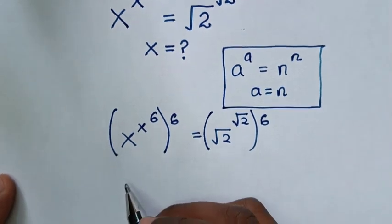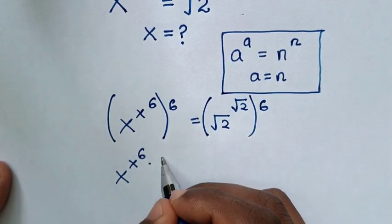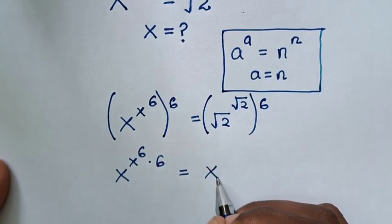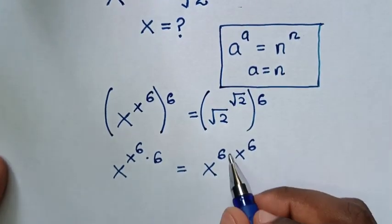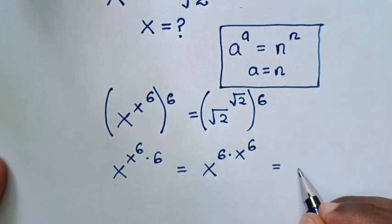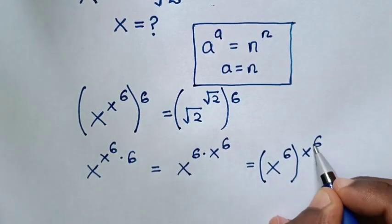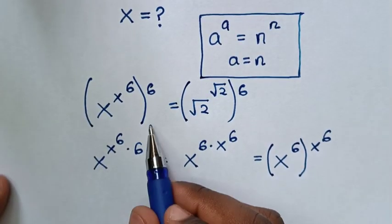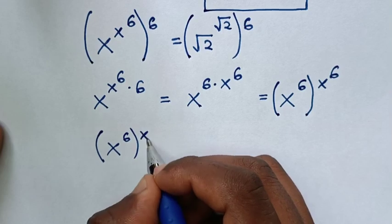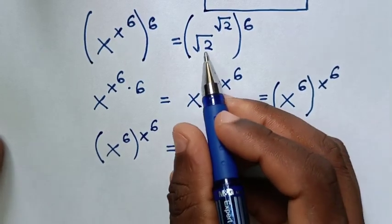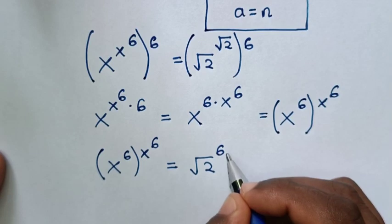From here it is the same as x power of x power of 6 times power of 6. In the next step we apply the bracket, so it will be equal to x power of 6, bracket, by power of x power of 6. We substitute this into x power of 6 is equal to square root of 2 power of 6 times square root of 2, which gives 6 square root of 2.